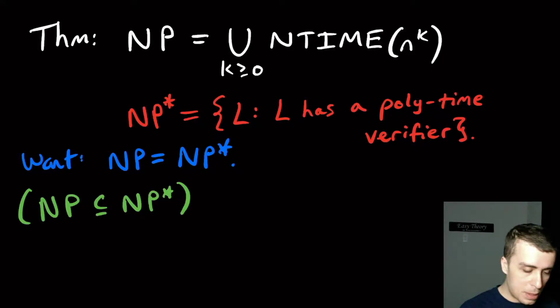Hi. So I want to talk about NP, which is what we define to be the set of all languages decided in non-deterministic polynomial time. That's what we defined it to be.